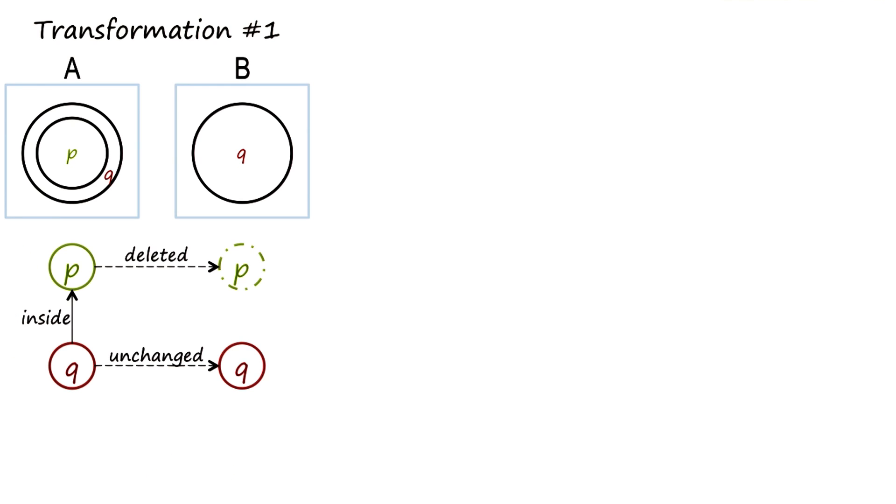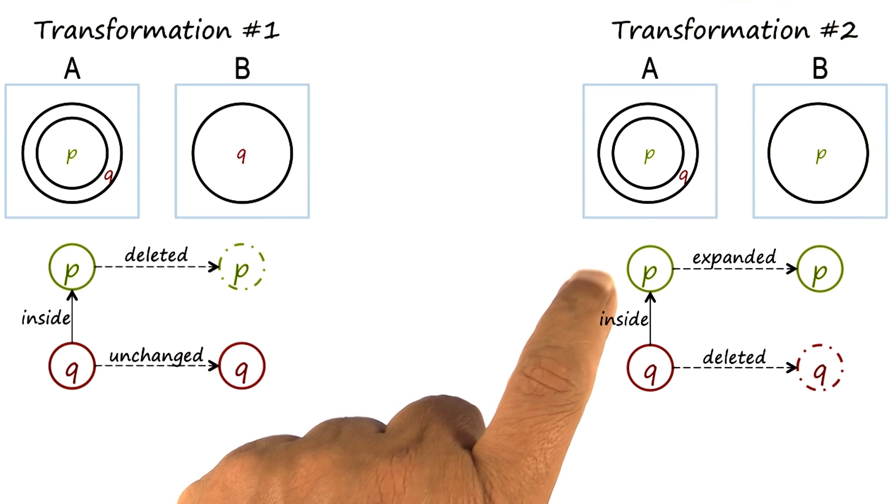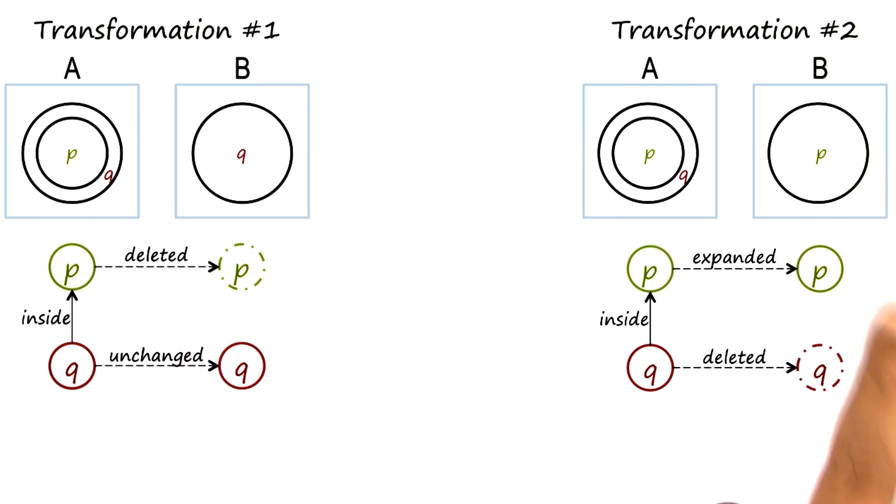Let's look at another view of the transformation from A to B. In this view, we can think of P as getting expanded, and Q, the outer circle, as getting deleted.